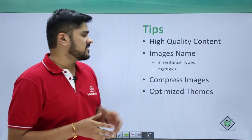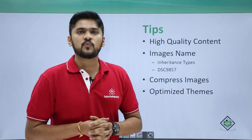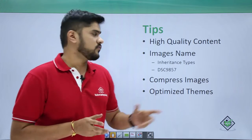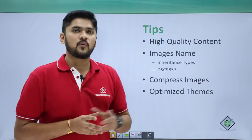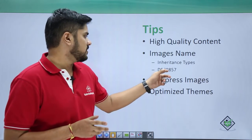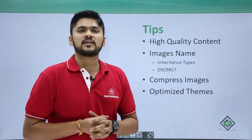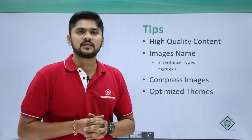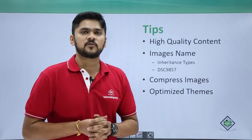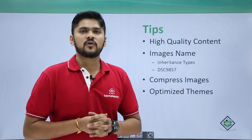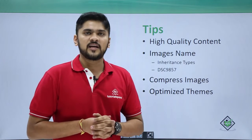The next one is image names. Always try to keep image names with a keyword — like the first type using a descriptive name, and avoid the second type like 'GSC9857'. For example, if your post is about Java 8 lambda expressions, you can keep the image name as 'lambda-expressions'. Through this you can easily optimize your images.